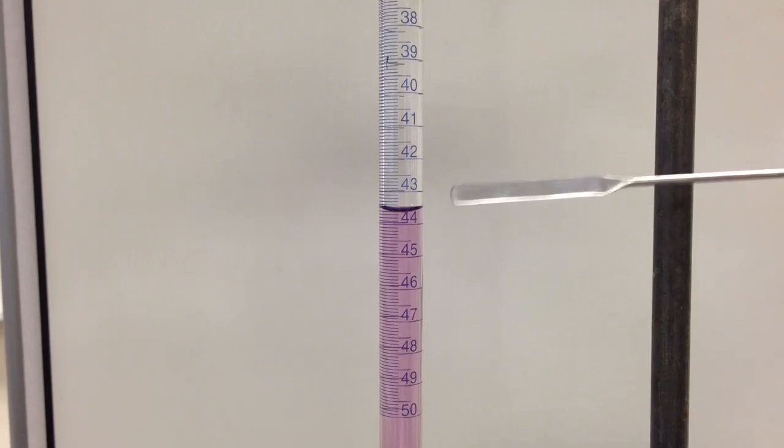Those are our numbered increments, and the next thing we need to do is determine the value of the unnumbered marks. Between 43 and 44 we have 10 marks, so therefore we would say that each unnumbered mark has a value of 0.1 milliliter.